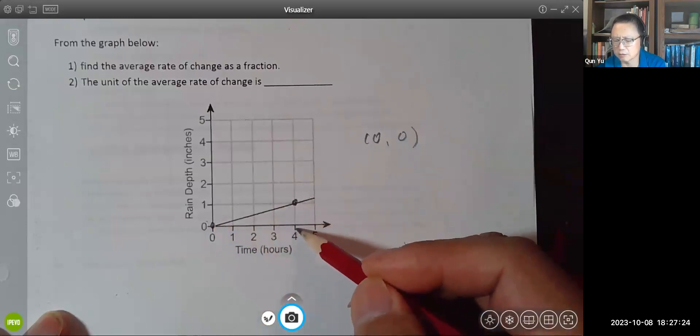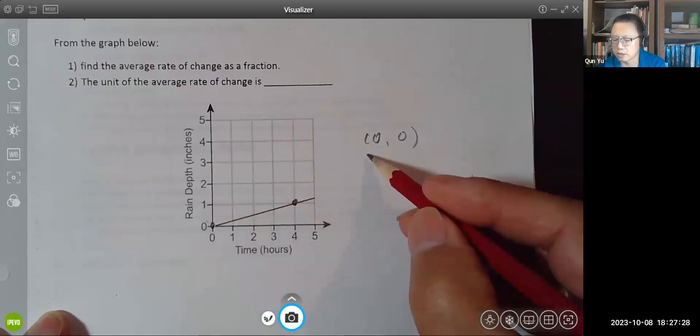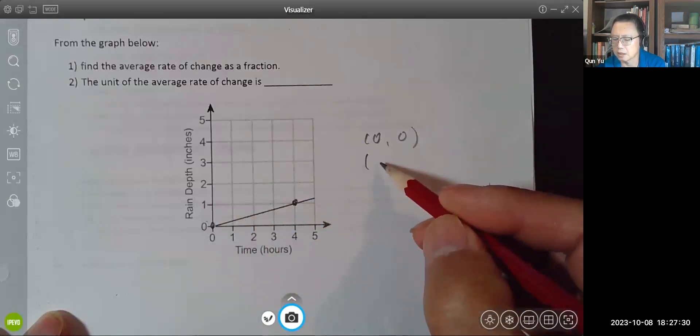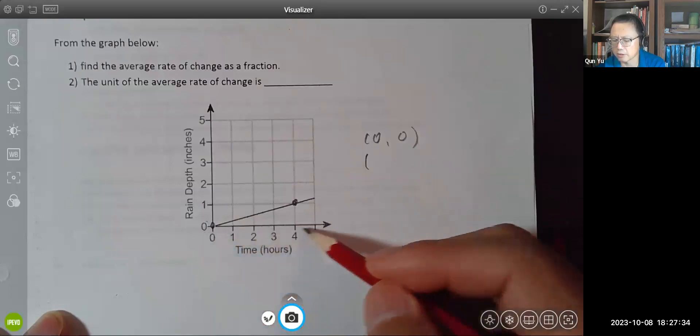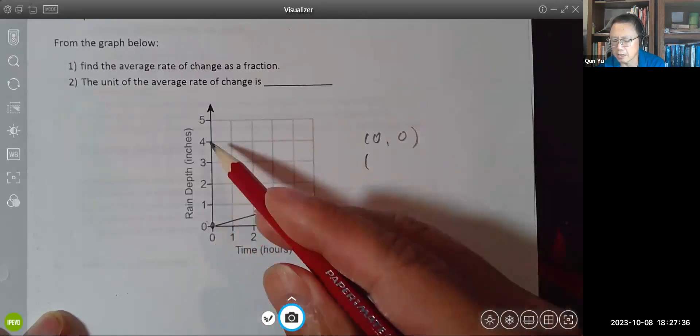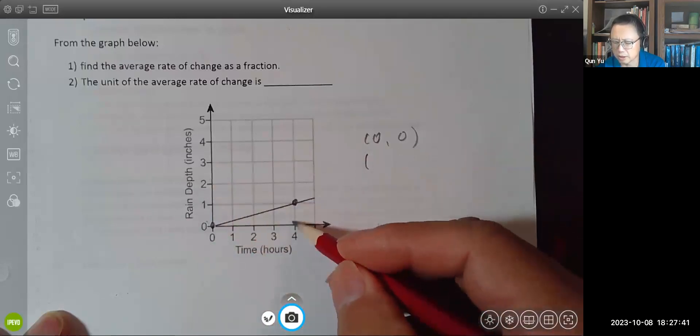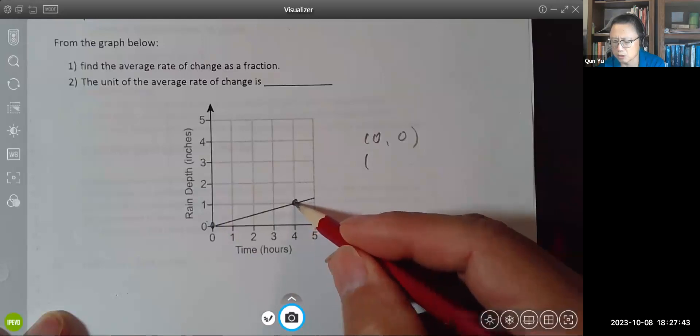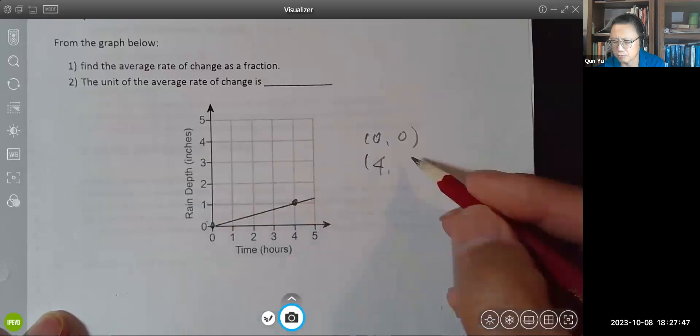So this one is zero, zero. And this one is four and one. Remember, always register the pair of numbers in the order of input and output. Input is always on the horizontal axis, output always on the y-axis, vertical axis. So horizontal coordinate for this point is four, vertical one is one. Four and one.